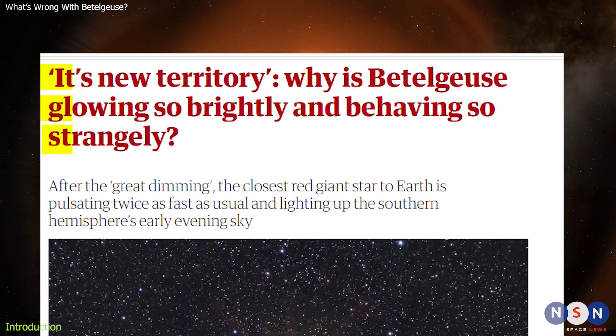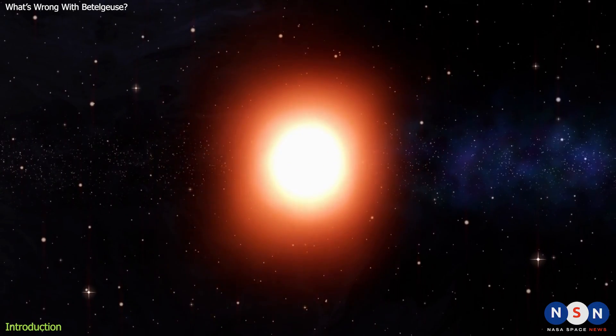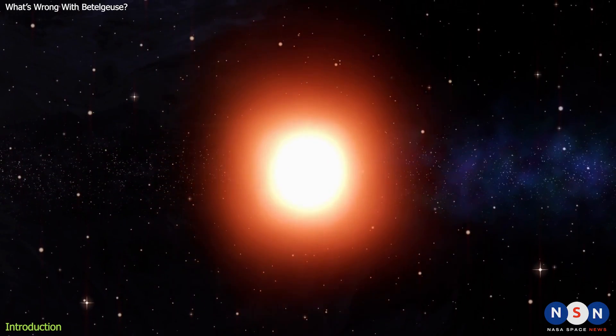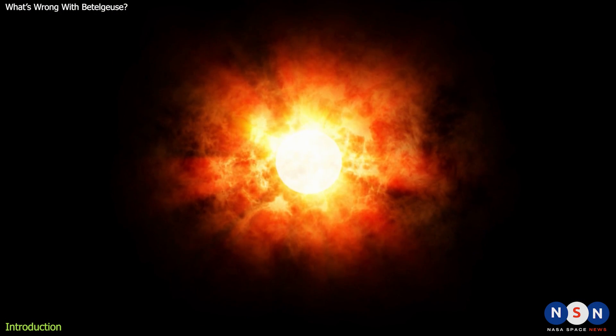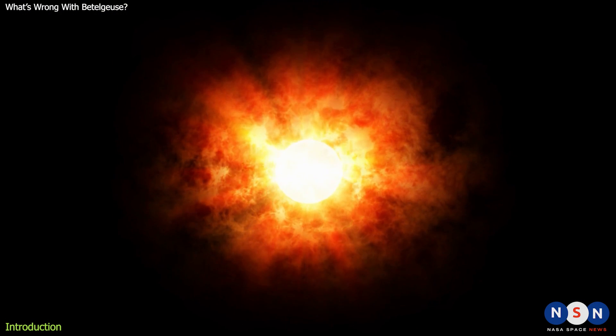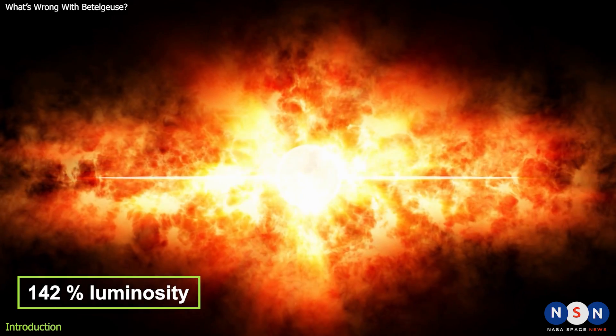According to the news, Betelgeuse has been fluctuating wildly in brightness recently, when it underwent a significant dimming event caused by a cloud of dust obscuring the star. Surprisingly, Betelgeuse has now become unusually bright, reaching 142% of its normal luminosity for the first time.